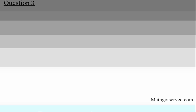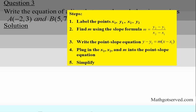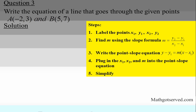Let's try the first example — question three. We're going to write the equation of a line that goes through the points negative two, three and five, seven. I'll provide the steps on the side so we can follow the procedure accurately. Step one: we rewrite and label the points. The first set, negative two, three, gets indexed as x1, y1. The second set, five, seven, gets indexed as x2, y2.